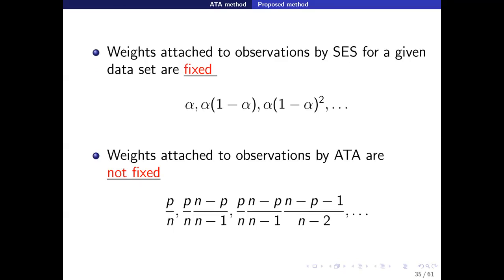For simple exponential smoothing, the weights attached to observations do not change depending on the sample size — no matter how large a sample you have, the latest observation always receives weight alpha. However, for ATA, the weights are flexible and depend on the amount of data at hand when smoothing: the latest observation receives P over N. As N gets larger, this decreases for the same P parameter.